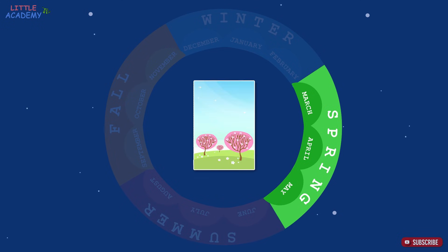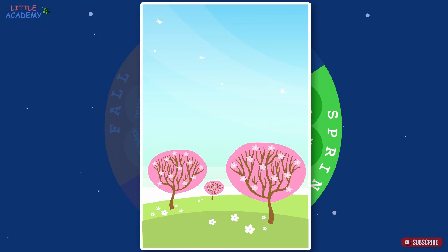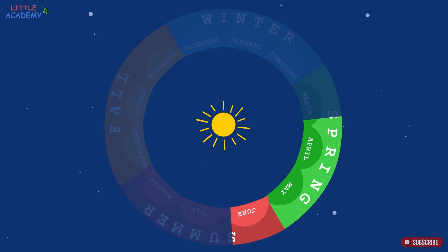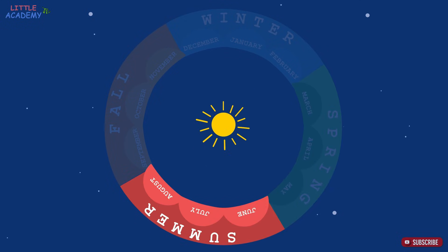In the spring it starts getting warmer, the snow melts, the grass gets green, the flowers bloom, and trees get their leaves back. In the spring we don't need such warm clothing as in the winter, so we put on a light jacket and shoes. After spring comes summer. The summer months are June, July, and August.